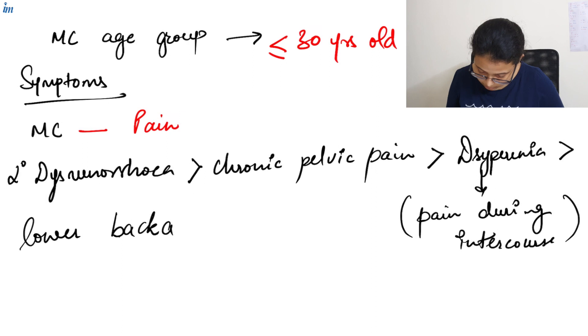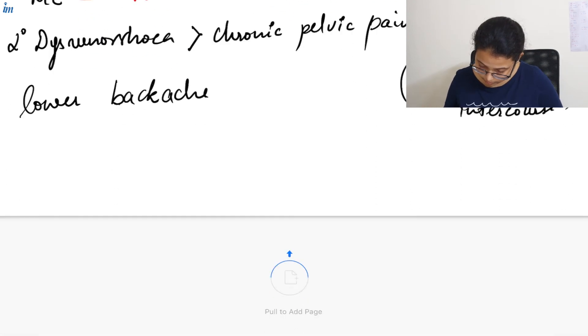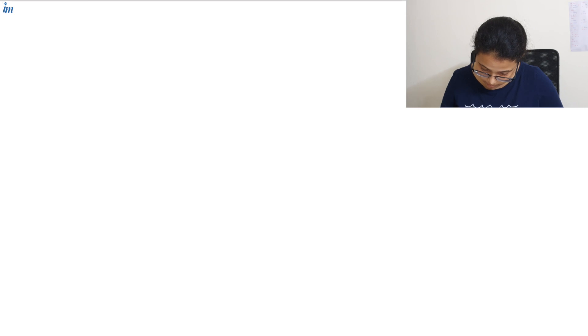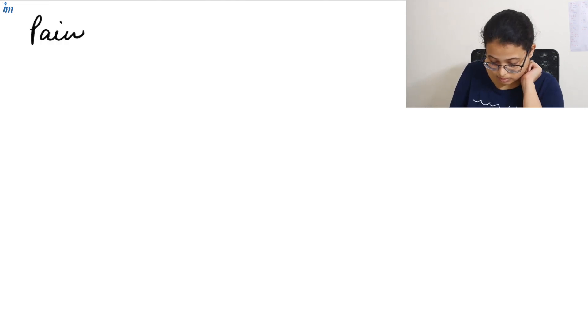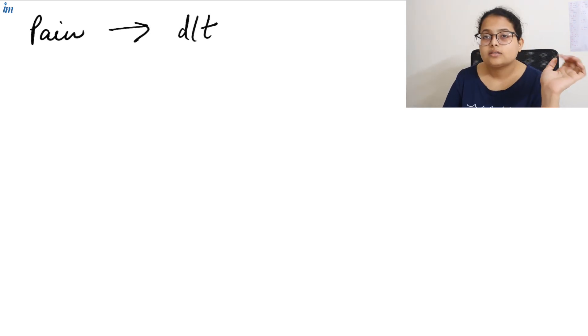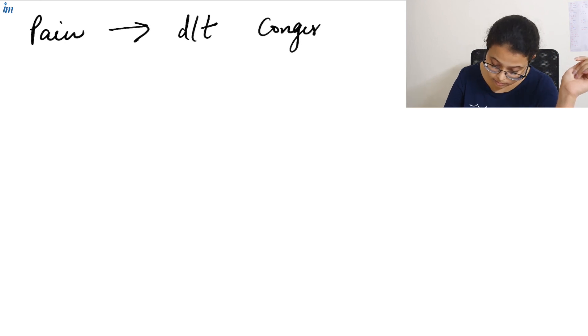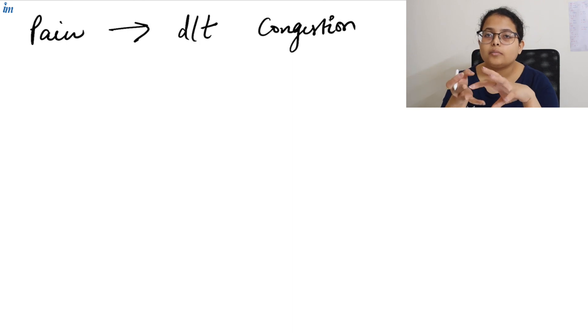Now this pain is due to different reasons. The first one is congestion. Now in uterine cavity the endometrial tissue has a space to come out with blood, but in endometriosis this endometrial tissue which is present in ovary or pouch of Douglas, it proliferates and becomes hormonally active and sheds during a cycle. And since there is no space for this blood to come out, it gets congested in that space and as a result there's pain.